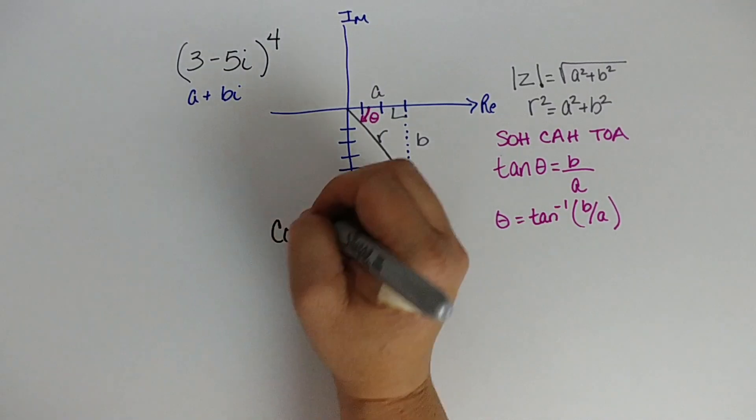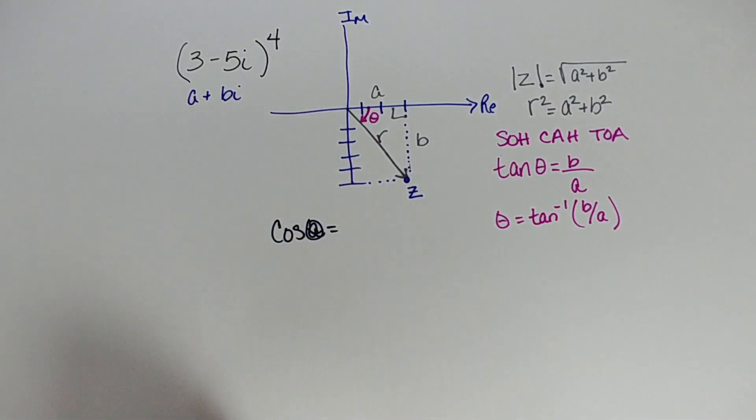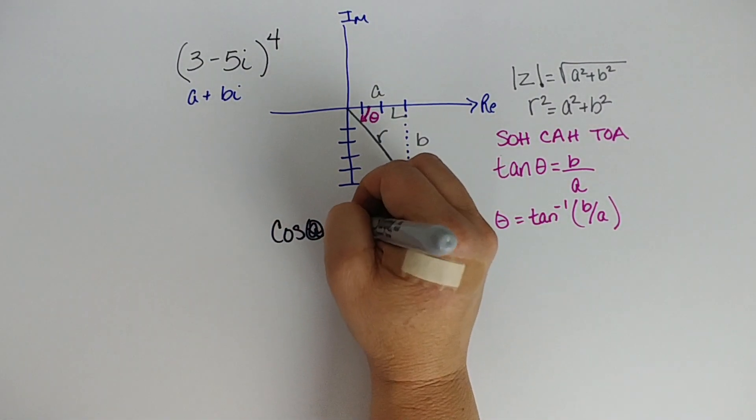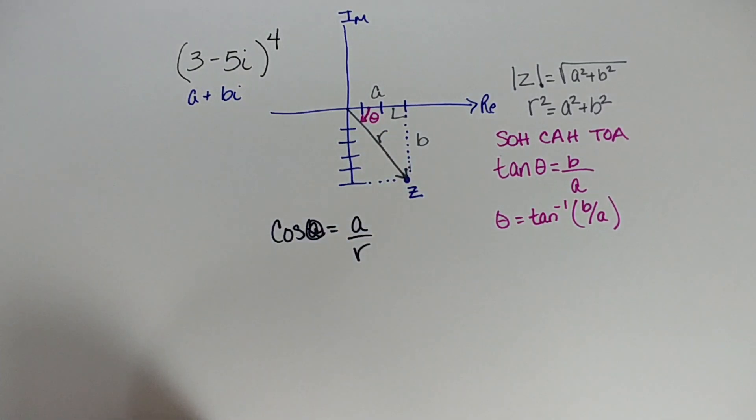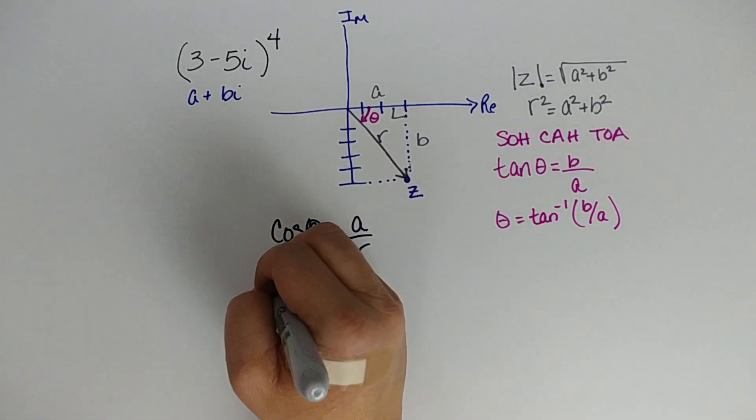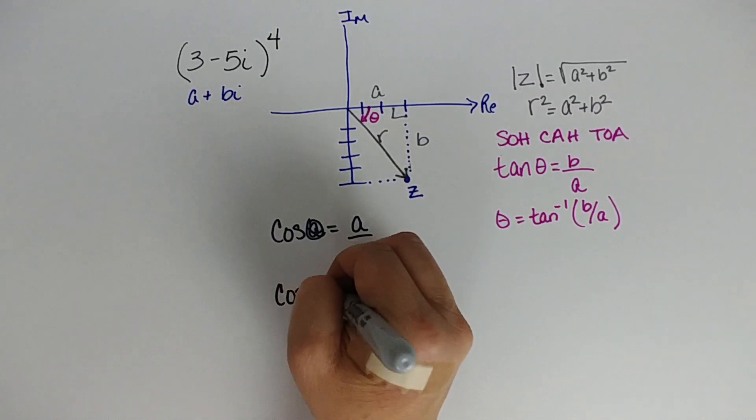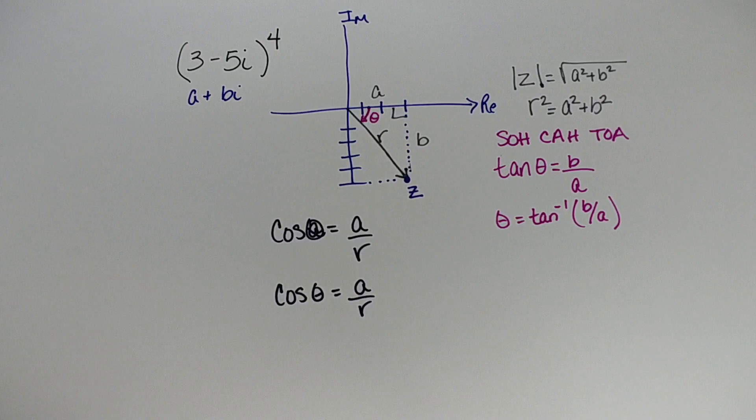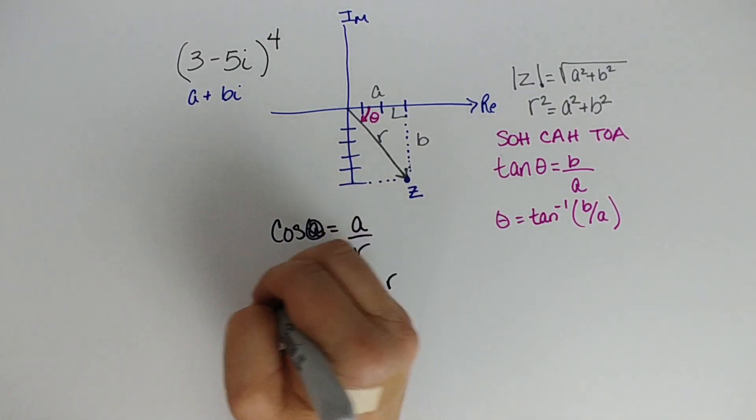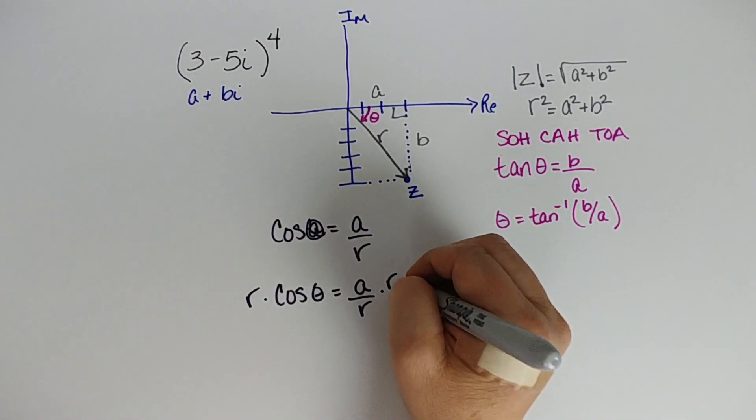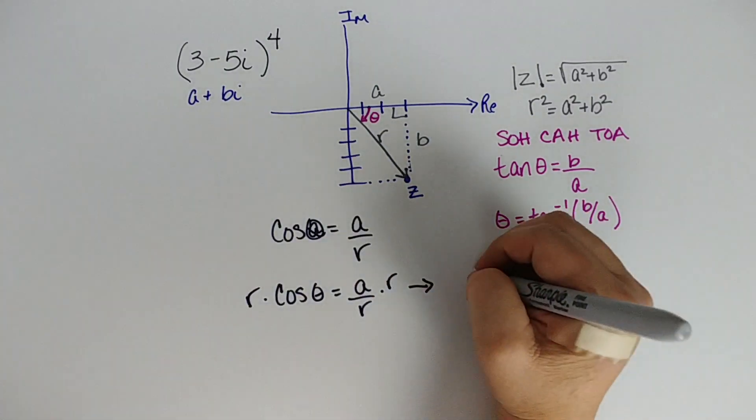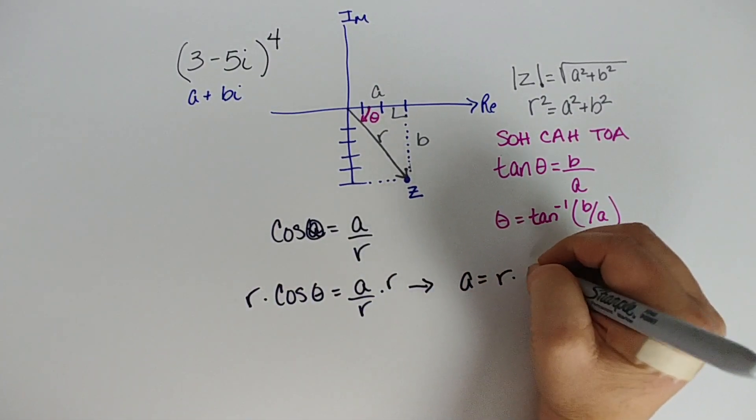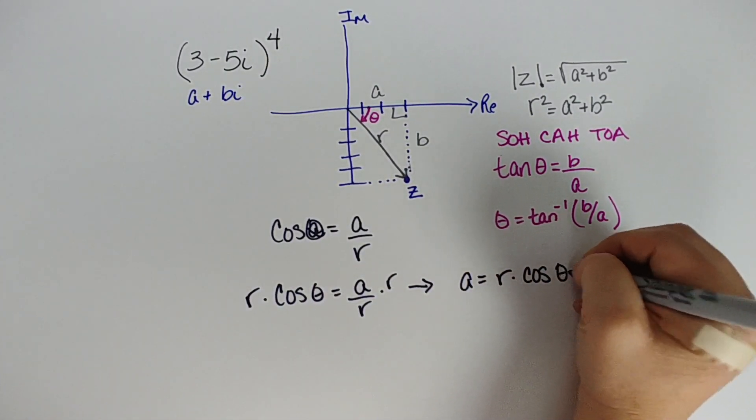I know cosine. Cosine is adjacent over hypotenuse. So then I know that the cosine of theta is a over r, which if I, remember, I only care about a, I want to solve for a. So I'm going to multiply both sides by r. And that gives me a equals r times the cosine of theta.